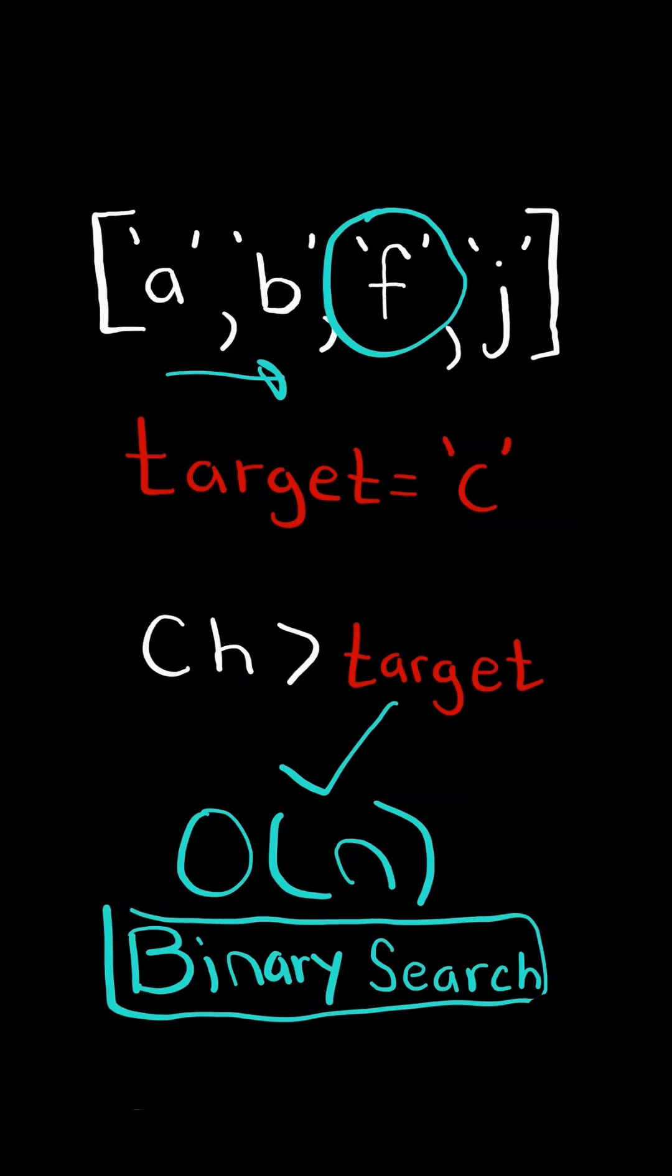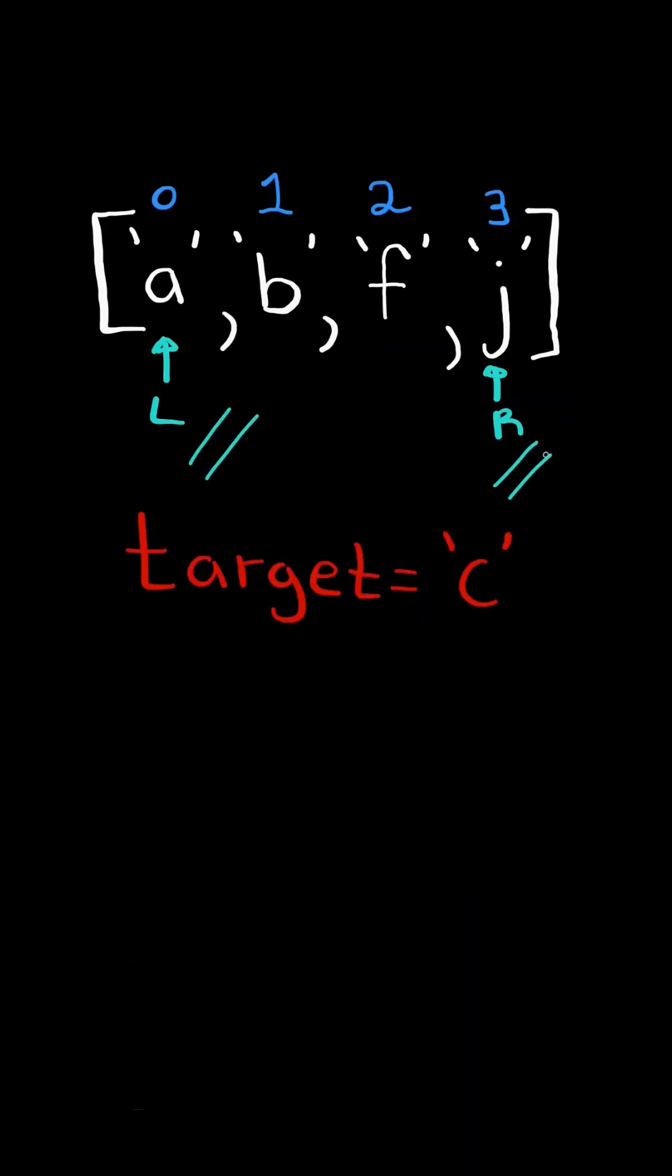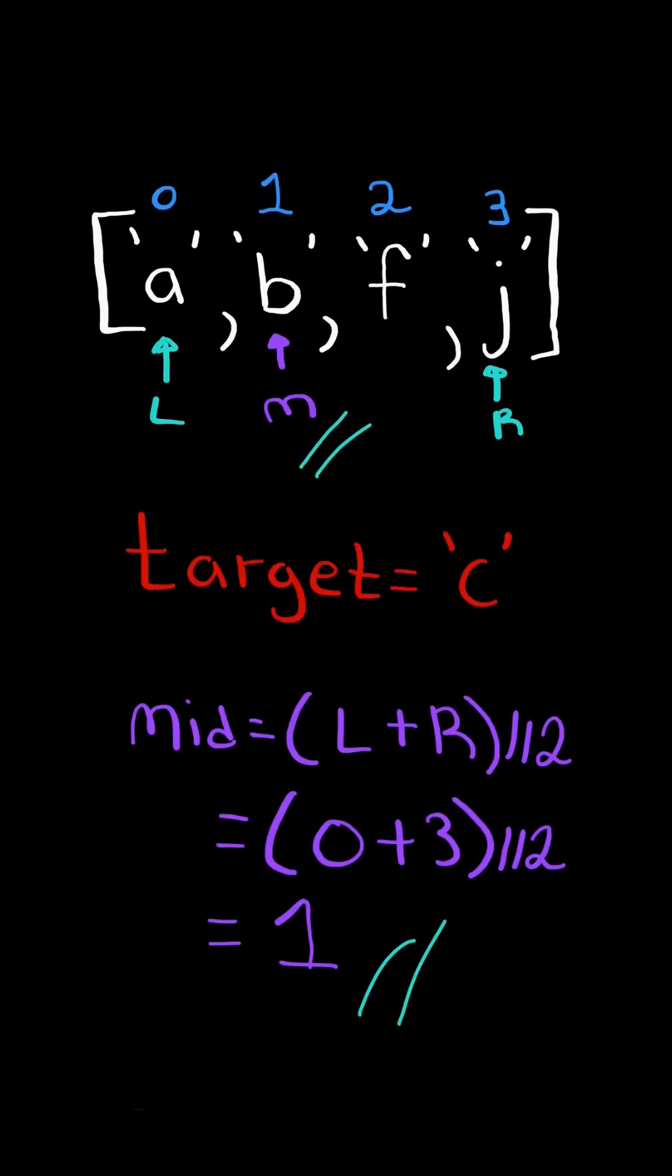A better approach uses binary search. We have two pointers, L and R. We calculate the midpoint. If the target is greater than the midpoint, then we advance our left pointer to mid plus one, and we continue.